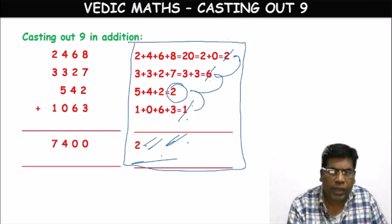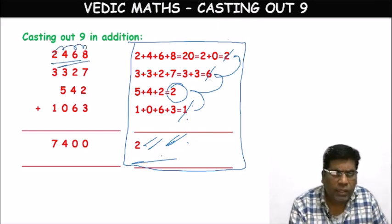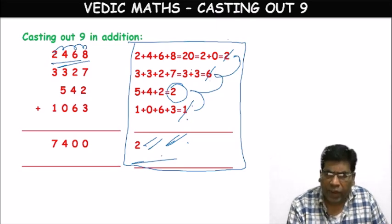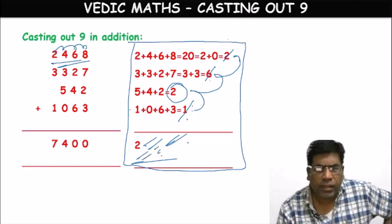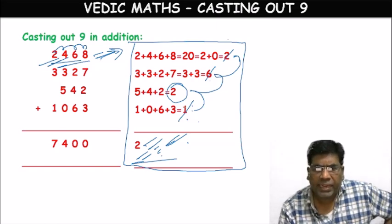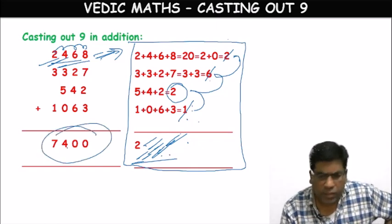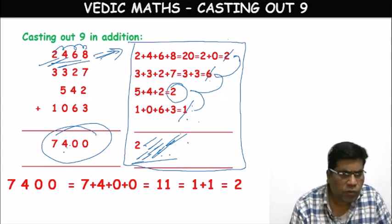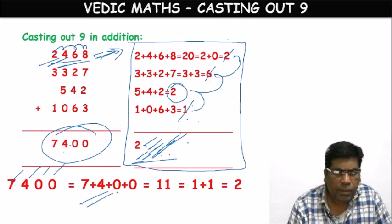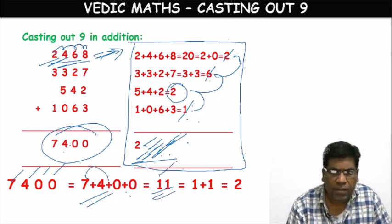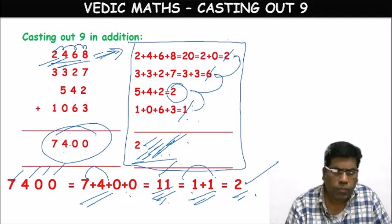In the Casting Out Nines method, we condense all given numbers into single digit numbers and also condense the result. We got the answer 2. Now for 7400: 7 plus 4 plus 0 plus 0 equals 11. No possibility of 9. 1 plus 1 equals 2. Here also we got 2 — so the answer is correct.